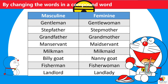Examples of masculine and feminine gender by changing the word in a compound word: gentleman/gentlewoman, stepfather/stepmother, grandfather/grandmother, manservant/maidservant, milkman/milkmaid, billy goat/nanny goat, fisherman/fisherwoman, landlord/landlady.